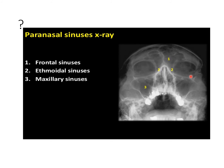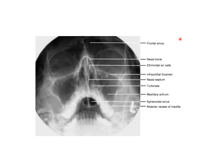This is Waters view, the occipito-mental view. Here you can clearly see the frontal sinus, the ethmoidal air sinus, and the maxillary air sinus. Also the bony orbit, the nasal septum and nasal cavity. In another Waters view you can again see the frontal sinus, ethmoidal air sinus, nasal bone, nasal septum, maxillary sinus, and the sphenoidal air sinus.